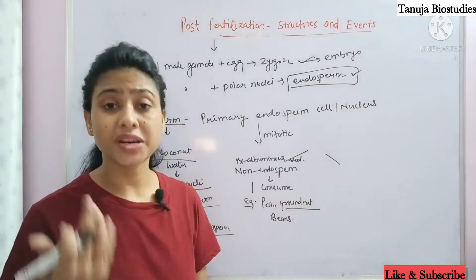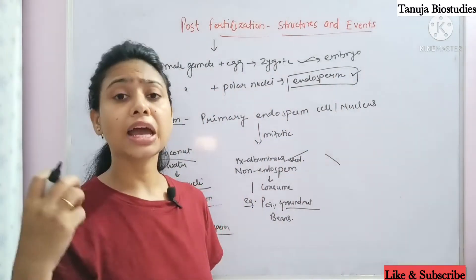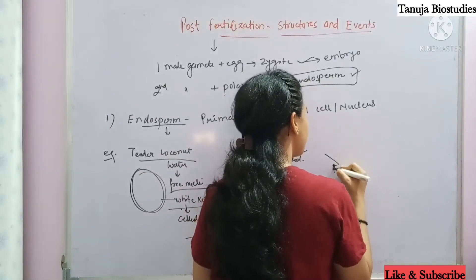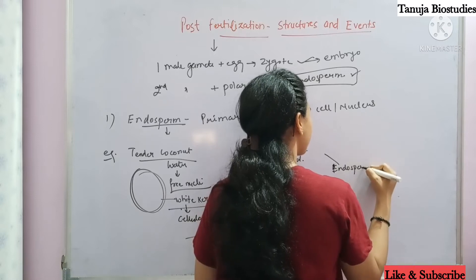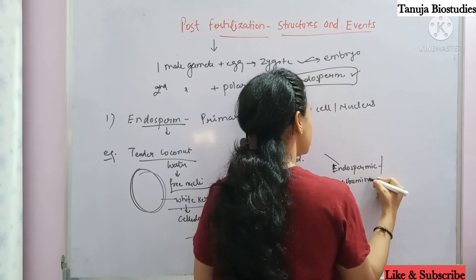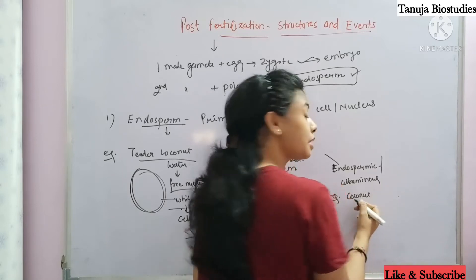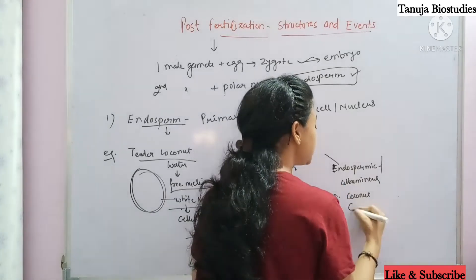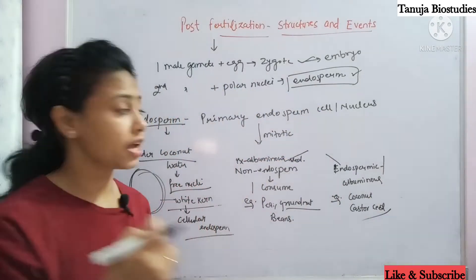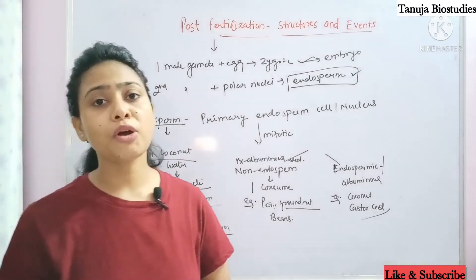In some seeds the endosperm is not completely consumed; the endosperm remains in the mature seed. That is called endospermic, or albuminous seed. Examples include coconut and castor — castor has oil in it and the endosperm is present. So this is all about endosperm.